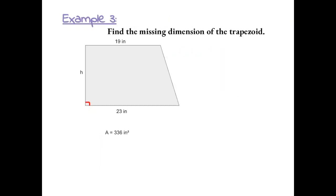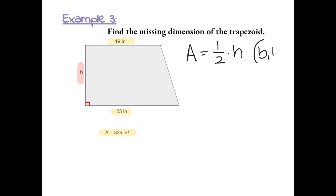Find the missing dimension of the trapezoid. In this case, we're given the area and the two bases, but we don't know the height. So let's start with our formula: area equals one-half times the height times the sum of the bases.